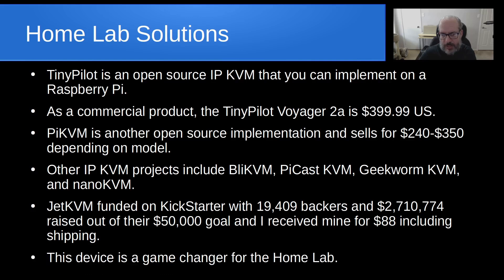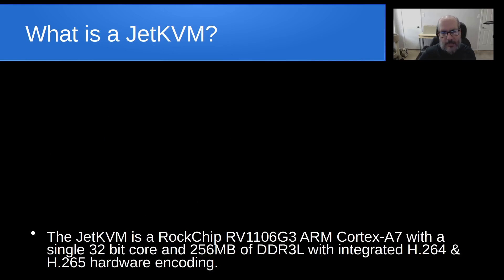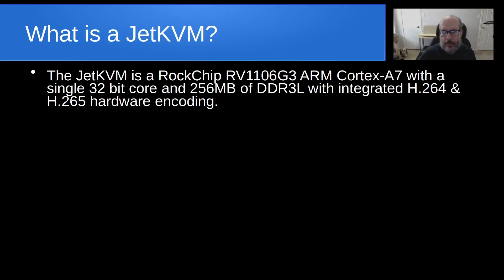This device is a game-changer for the homelab, and I'm going to discuss why. The JetKVM has a Rockchip RV1106G3, which is an ARM Cortex-A7 processor — only a single-core 32-bit processor — and it only has 256 megabytes of DDR3 low-powered memory.